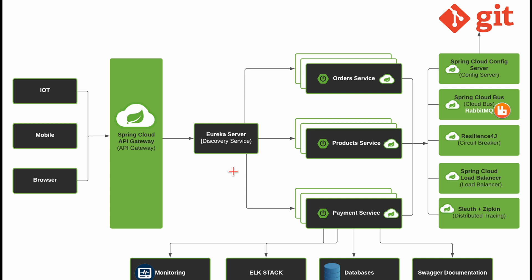Generally speaking about a distributed environment, services need to communicate with each other. Let's say we have some client that wants to communicate with our microservice. In this case, we cannot directly expose our microservice to clients. The client has to come through the API gateway to reach our microservices.